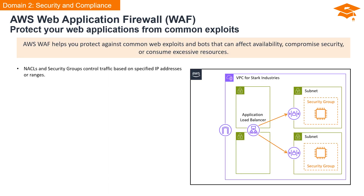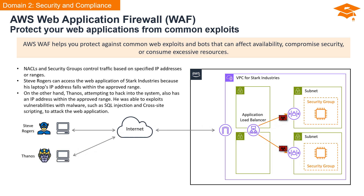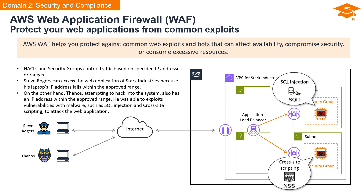The AWS Web Application Firewall, commonly known as AWS WAF, is your shield against common web exploits and disruptive bots. Its purpose is to fortify your web applications, shielding them from threats that could compromise security, impact availability, or excessively consume resources. Both NACL and security groups operate by managing traffic through specified IP addresses or ranges. In our analogy, Steve Rogers is granted access to the Stark Industries web application because his laptop's IP address aligns with the approved range. Conversely, Thanos, attempting to compromise the system, possesses an IP address within the authorized range and exploits vulnerabilities using malware, including SQL injection and cross-site scripting, successfully launching an attack on the web application.